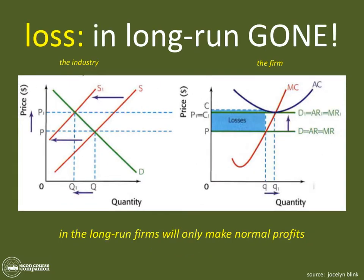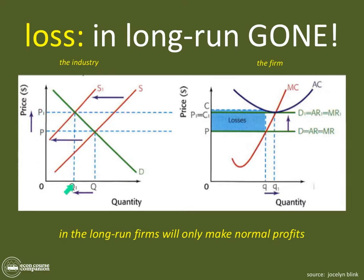In the long run, all of those losses would be gone for the firms that elected to stay in the business. As firms leave this market, that has the effect of shifting the supply curve in the industry inward — fewer firms means less supply. That inward shift gives us a new price-quantity equilibrium in the industry supply and demand diagram of Q1 and P1.